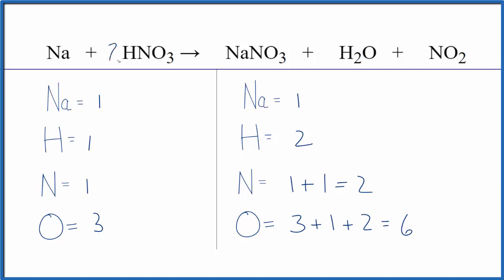So we put a coefficient of two, one times two. That will balance the hydrogen atoms, the one nitrogen times two, because this two, it goes to everything. One times two, those are balanced. And three oxygens times two, that gives us six.